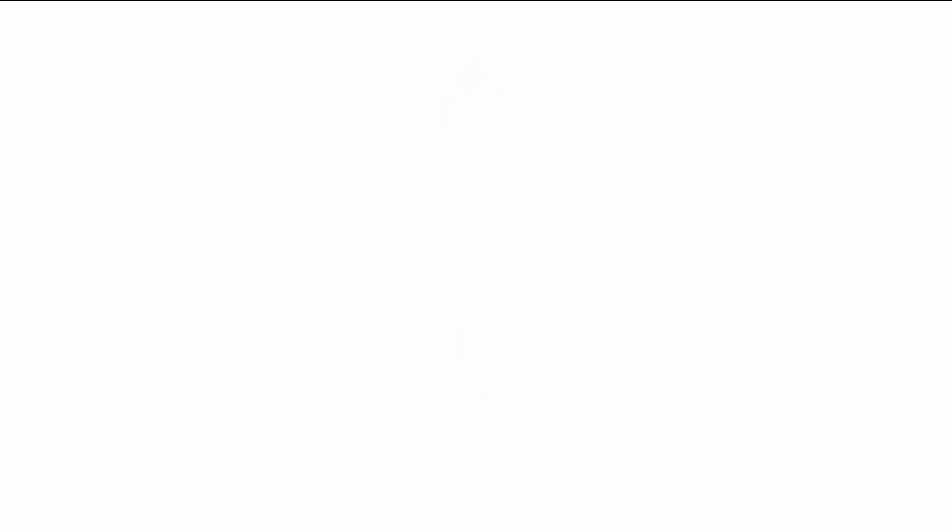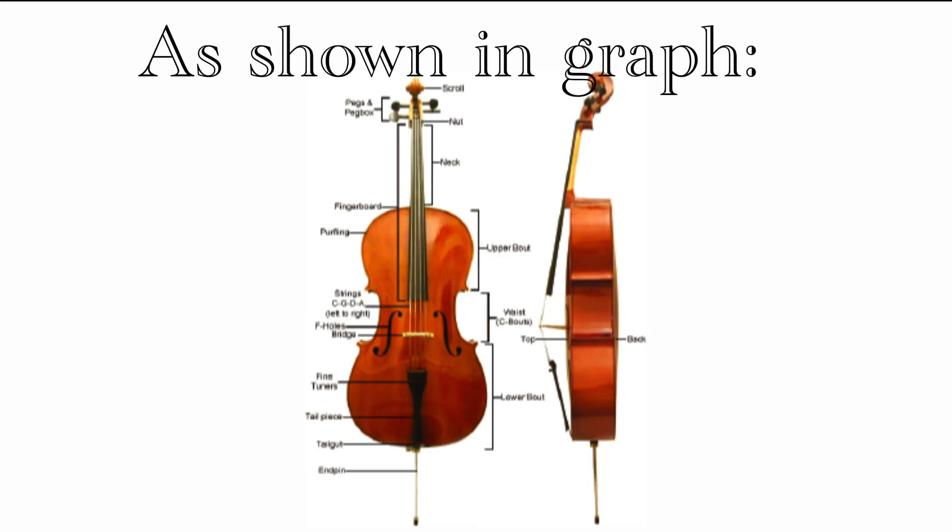Then is to actually build the cello. A saddle is attached to relieve the stress off of the strings. This technique is used so that if the cello needs to be repaired, it will be easier to remove.